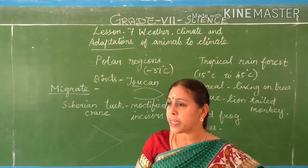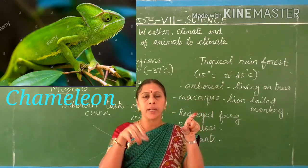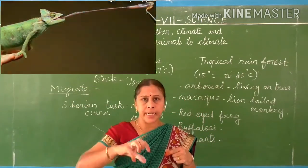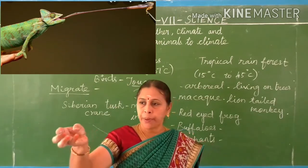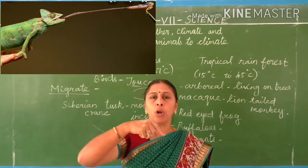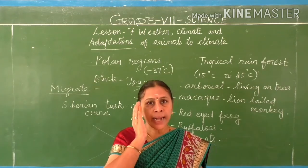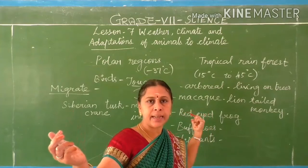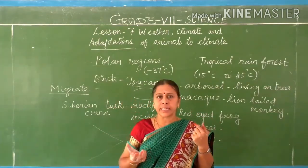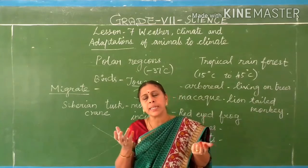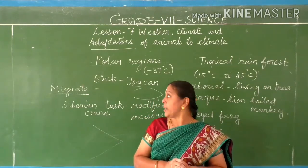Another good example is the chameleon. It has large bulging eyes and a long sticky tongue which it rolls out to catch prey — the prey sticks to the tongue and is pulled back into the mouth. Its right eye can see the front side and the left eye can see the back side at the same time, as its eyes can rotate 360 degrees. Different animals adapt different characteristics to live in their environment.